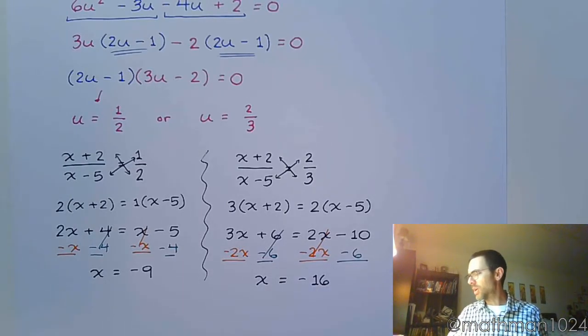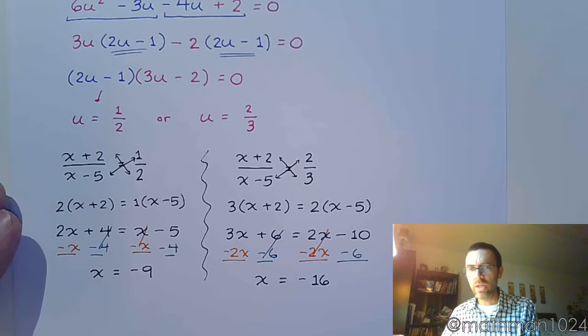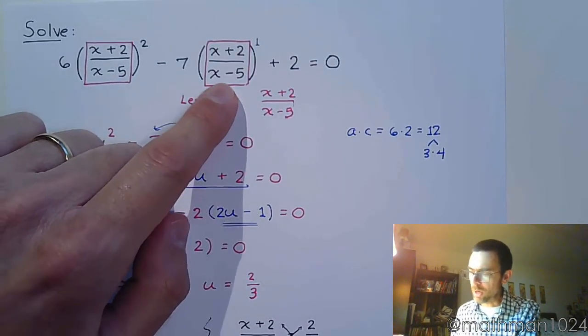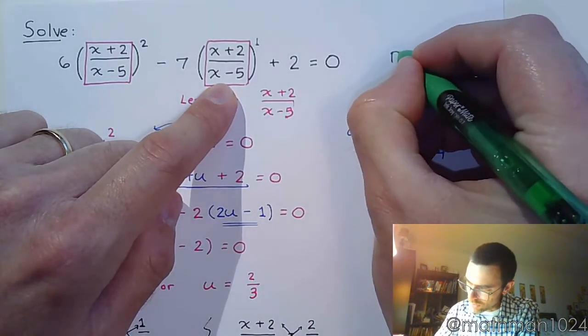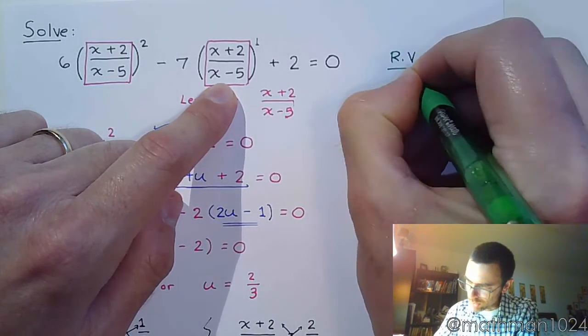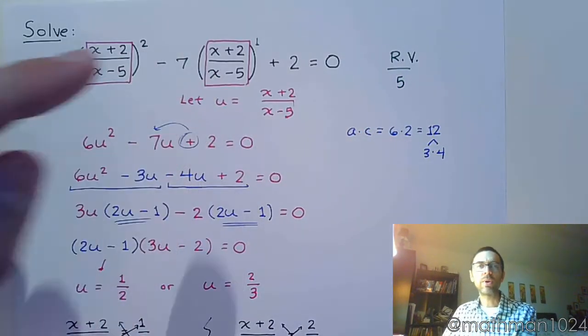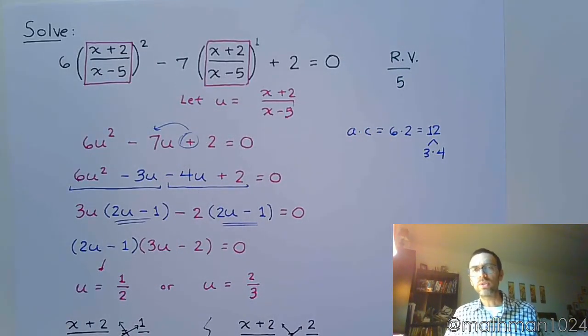And we have that x is equal to negative 16. But again, we did have the issue of, we could have a restricted value. So let's check that real quick. At the very beginning, your denominator is x minus 5. So we know, in this whole process, x cannot equal positive 5. And that's my only restricted value. The restricted value only comes from what makes the denominator equal to 0.